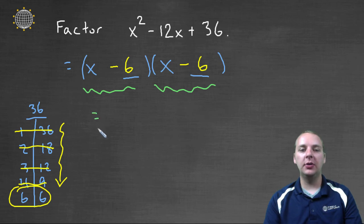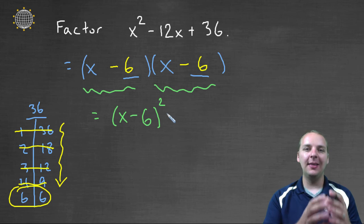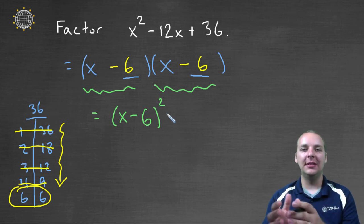And so technically, the way we should actually write this for a final answer is (x - 6)², because that's what it means to square something. It means to take it and multiply it times itself.